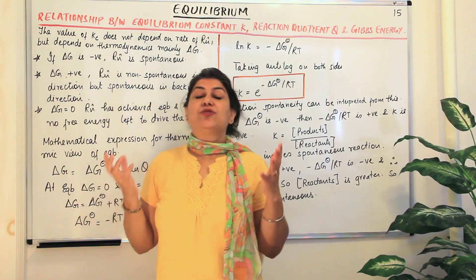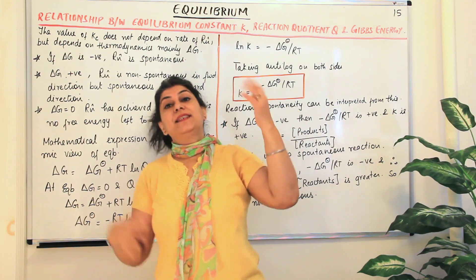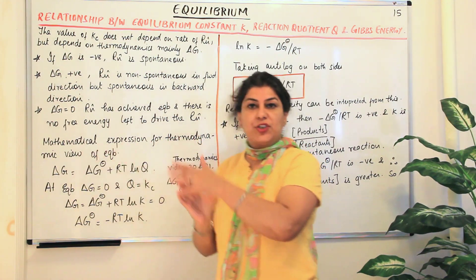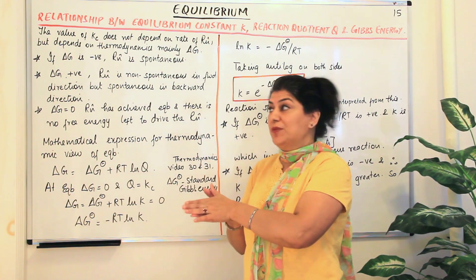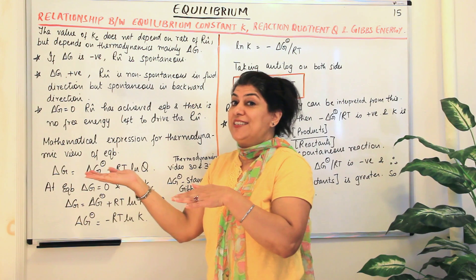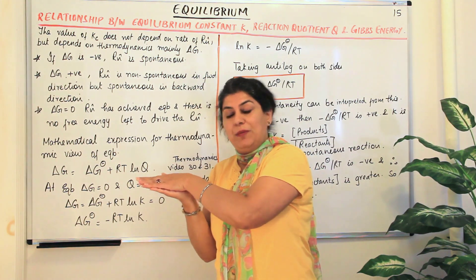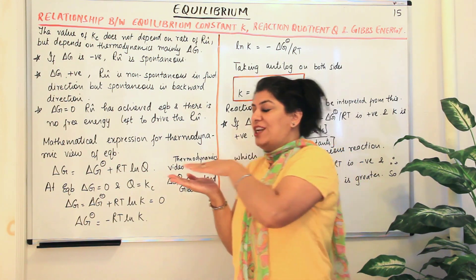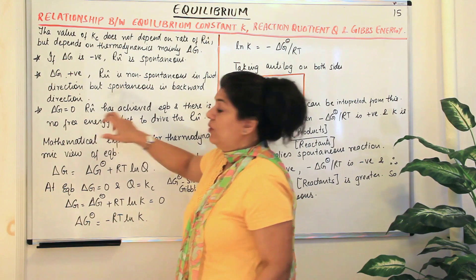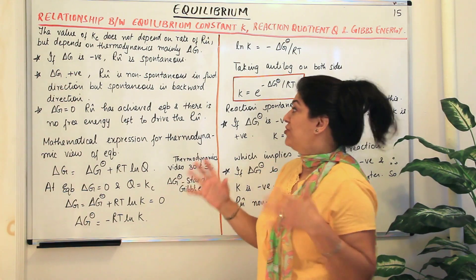If the value of delta G is equal to zero, then we say the reaction has already attained equilibrium. At equilibrium, all concentrations become constant and the rates of both reactions become the same. Since delta G in one direction is positive and in the other direction is negative with the same numerical value, they cancel out and delta G becomes zero. There is no free energy left to drive the reaction.